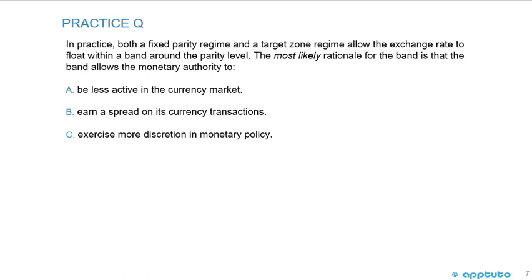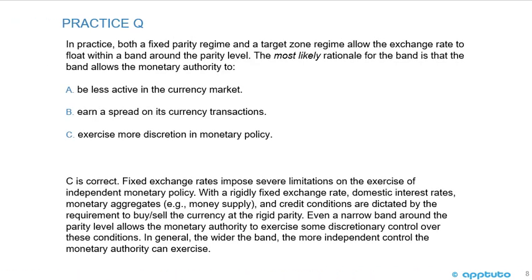Another practice question: In practice, both a fixed parity regime and a target zone regime allow the exchange rate to float within a band around the parity level. The most likely rationale for the band is that it allows the monetary authority to: A, be less active in the currency market; B, earn a spread on its currency transactions; or C, exercise more discretion in monetary policy. The correct answer is C.